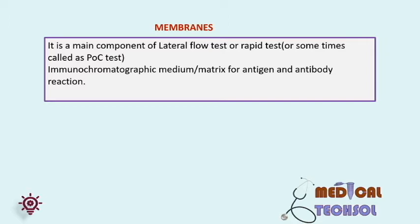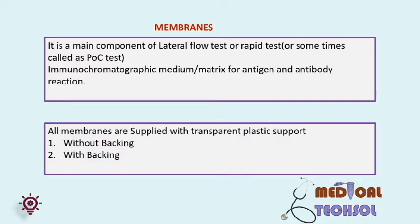Nowadays most membranes are supplied with transparent plastic support. The membranes are cast onto a solid polyester film by the supplier or manufacturer for easy handling and to provide higher mechanical strength, in order to avoid damage during operation or transport. They also separate the membrane from contacting the adhesive or gumming used in the lamination process, thereby acting as a barrier against contamination from adhesive. Generally used membranes are nitrocellulose.